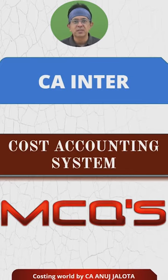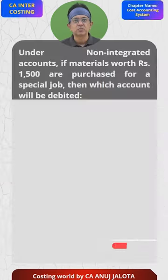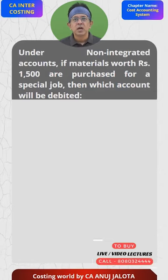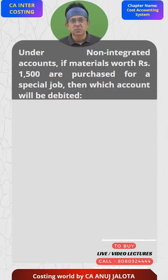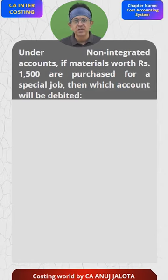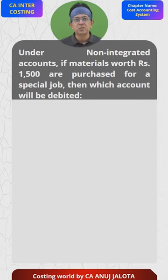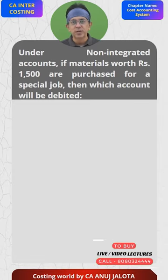CA Inter Chapter 7 Cost Accounting System MCQs. Under the non-integrated system of accounts, if material worth Rs. 1500 are purchased for a special job, then which account will be debited?